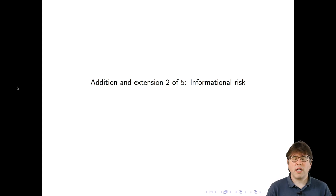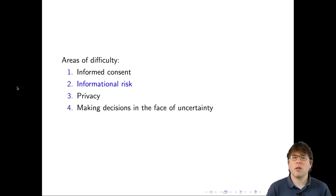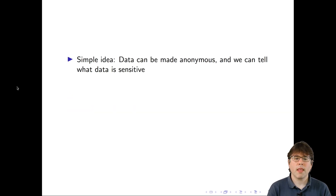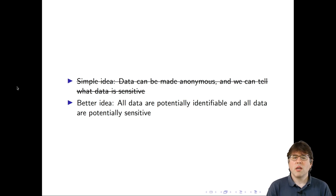The second area of addition and extension is informational risk — the risk that comes to people if information about them is made public. We started with the simple idea that data can be made anonymous and we can tell what data are sensitive, but I tried to build up the idea that all data are potentially identifiable and all data are potentially sensitive. Many social scientists struggle with this idea.